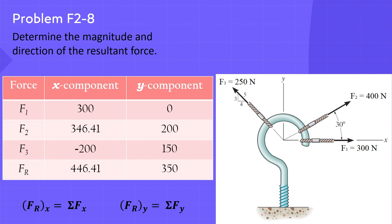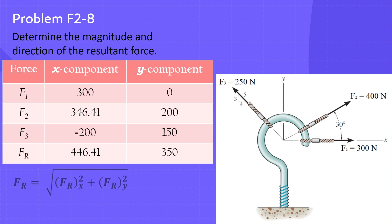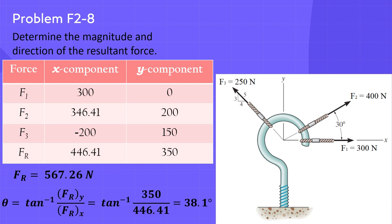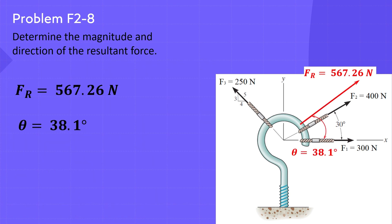Once the x and y components of the resultant force are obtained, use this equation to find its magnitude. FR equals the square root of 446.41 squared plus 350 squared equals 567.26 newtons. To find its direction, θ equals tan inverse of 350 divided by 446.41 equals 38.1 degrees. Finally, the resultant force acting on the screw eye has a magnitude of 567.26 newtons and is inclined by an angle of 38.1 degrees measured counterclockwise from the positive x-axis.